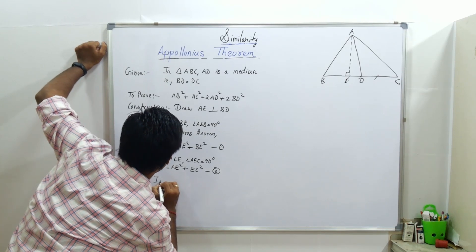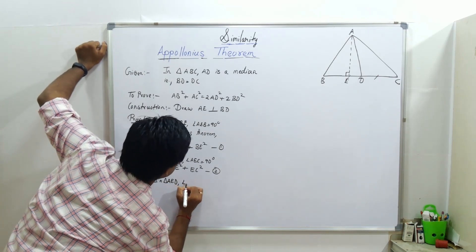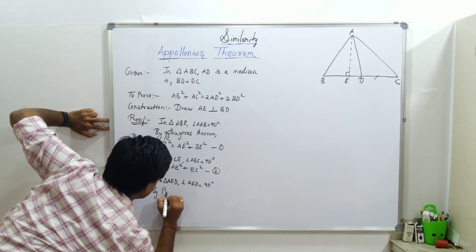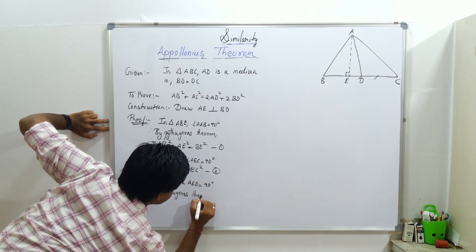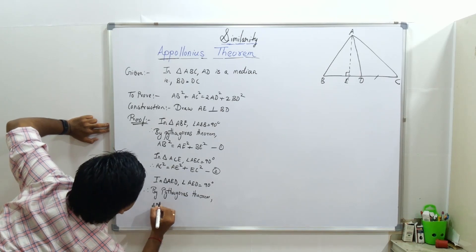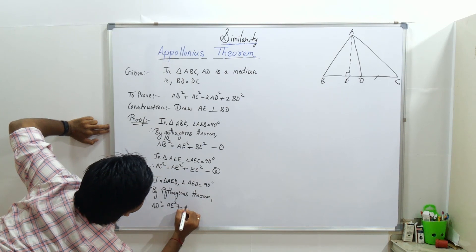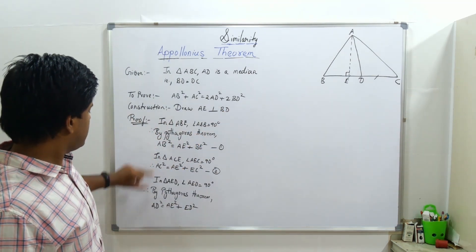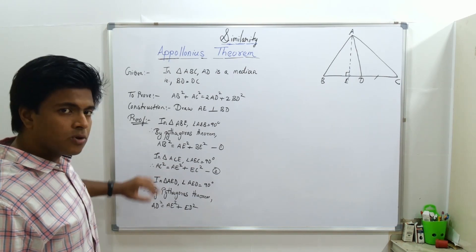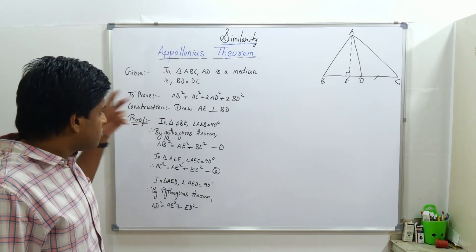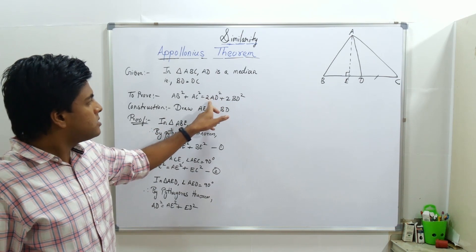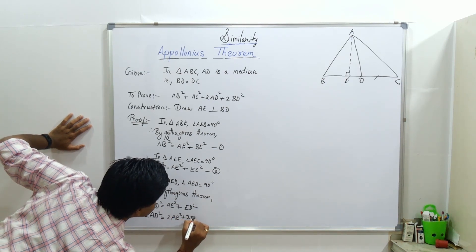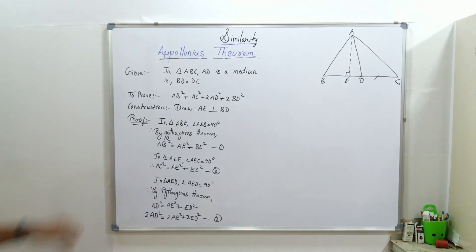Now what we want is the AD part. So in triangle AED, angle AED equals 90 degrees. Therefore, by Pythagoras theorem, AD square equals AE square plus ED square. Now I will keep AD square on the right hand side. Since we need 2 AD square, I will multiply both sides by 2: 2 AD square equals 2 AE square plus 2 ED square. This is our third equation.